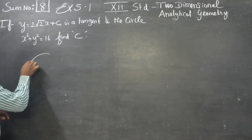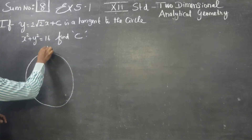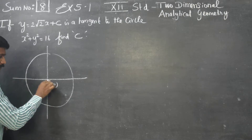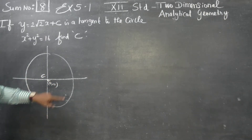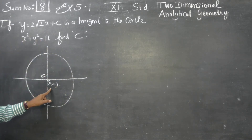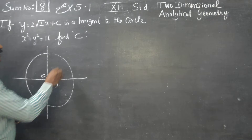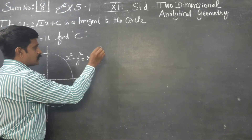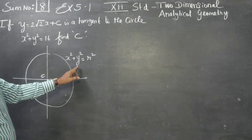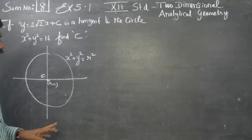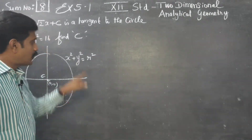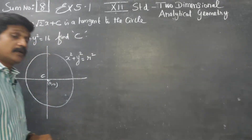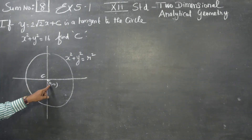Before entering into the sum, a small piece of information about a circle with centre as origin. When a circle has its centre as origin, the equation will be simply x square plus y square is equal to r square. This x square term, y square term, and the constant r square — this is the circle with centre as origin.